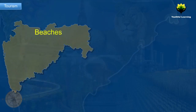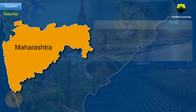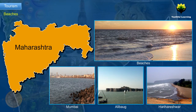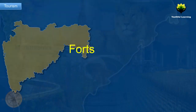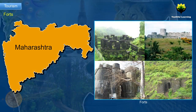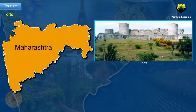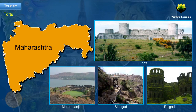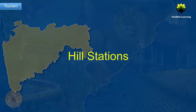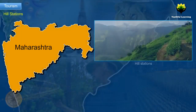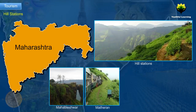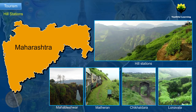Beaches: The state has many beautiful beaches in Mumbai, Alibag, Harihareshwar, etc. Forts: A number of forts are found in Maharashtra. Forts like Murud-Janjira, Shivneri and Raigad etc. are quite popular among tourists. Hill Stations: Some famous hill stations in Maharashtra are Mahabaleshwar, Matheran, Chikhaldara, Lonavla, etc.